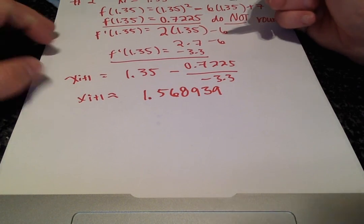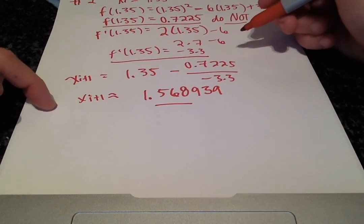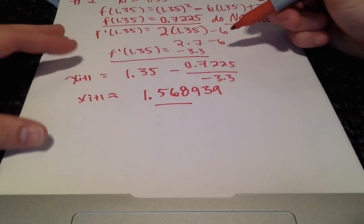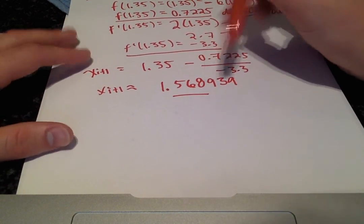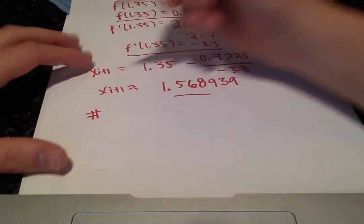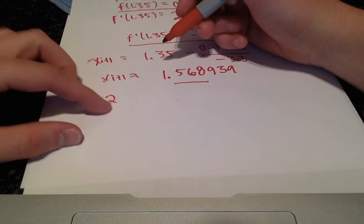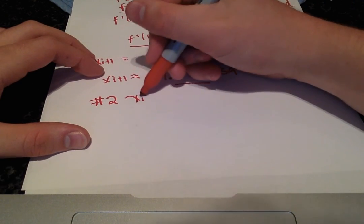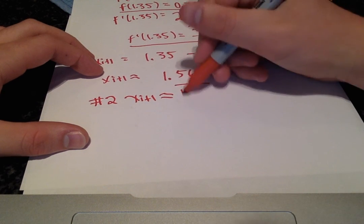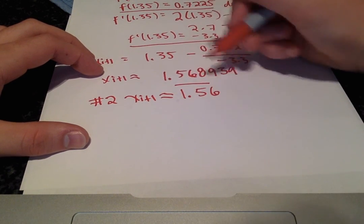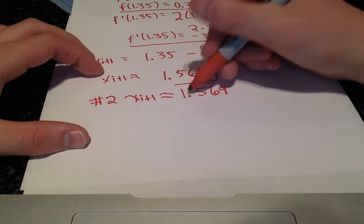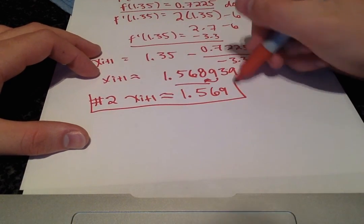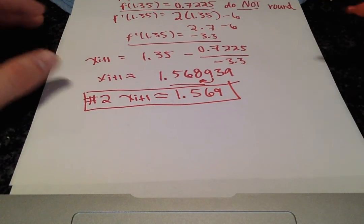Okay, and guess what? This is the end of our iteration. So this is where we will round to three decimal places. This is what the clarification was referring to. So our second approximation with the second iteration is x of i plus 1 is approximately 1.569. We round up to 1.569.